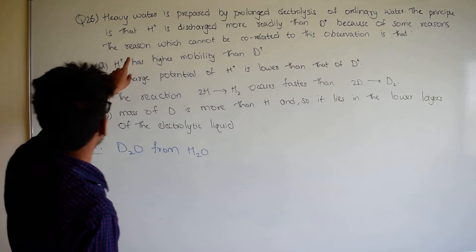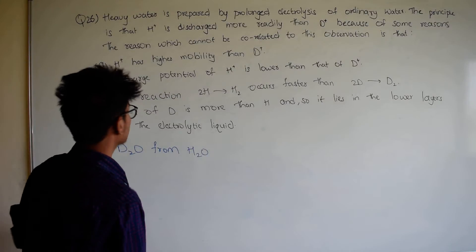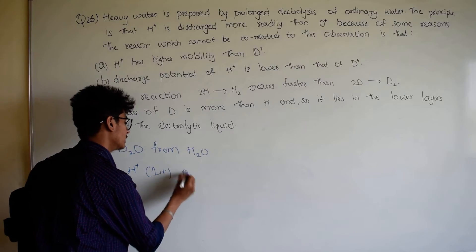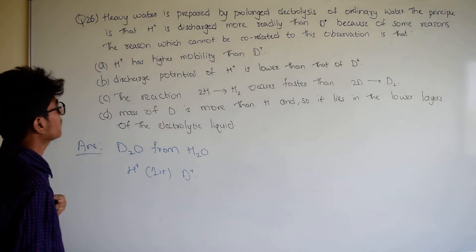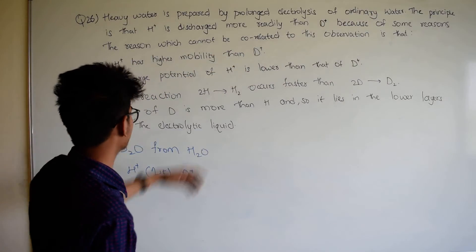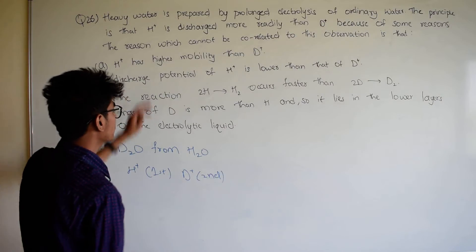The principle is that H+ is discharged more easily than D+. First, H+ is discharged. First, D+ is discharged. This is because of some reasons. The reason which cannot be correlated to this observation. This is the first observation. This is the second observation. This observation is correlated.